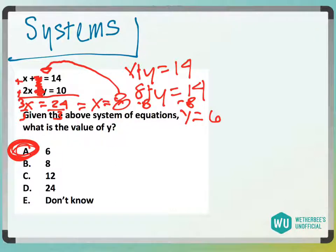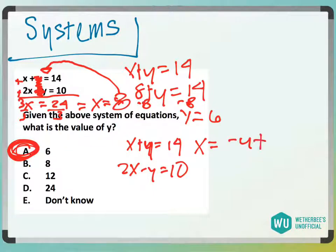You could also solve this by substitution. I'd have x plus y equals 14, 2x, oh sorry, that was a minus y, that's my bad, minus y equals 10. So if you wanted to do substitution, I could move this y to the other side, which would give us x is negative y plus 14.